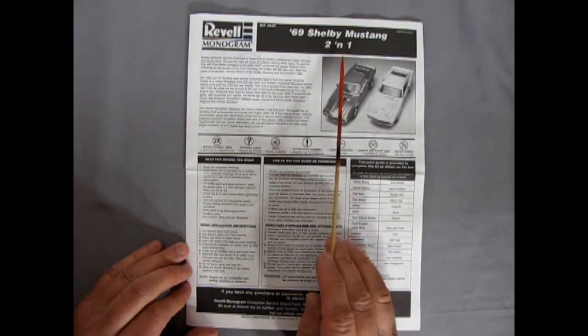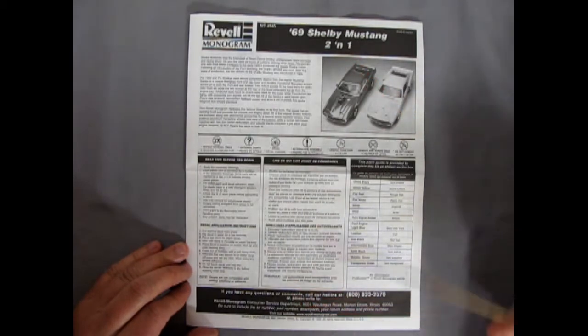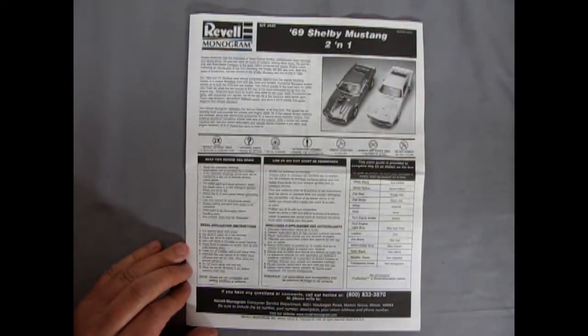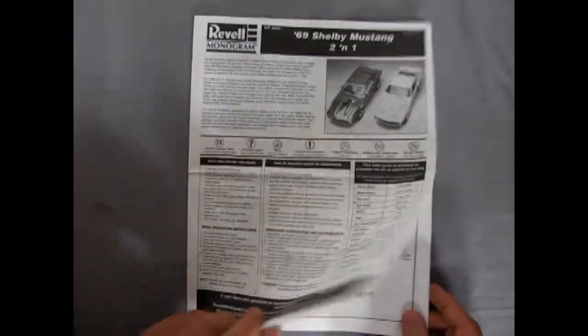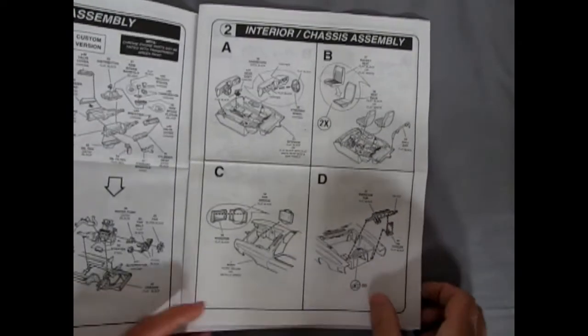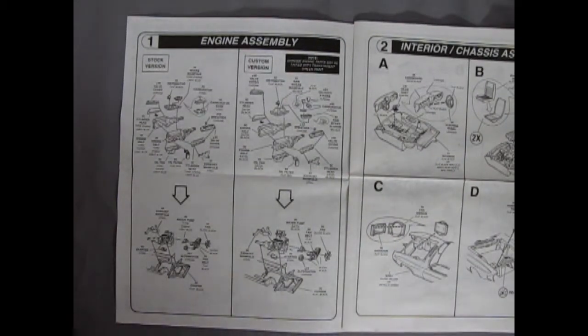What makes them distinct is of course the special fiberglass components that Shelby put on these cars. Looking at our instruction sheet. This of course is a two-in-one. But according to what's not left in this kit anymore, it's really a one-in-one. That's why I'm not selling this one. I'll have to build it. We'll take a look at our instructions. They fold out into these multi-page pieces.